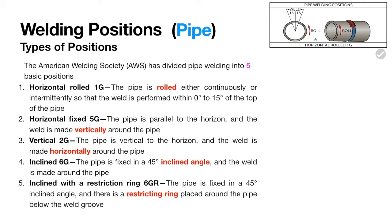Next we move to horizontal fixed or 5G. In 5G, the pipe with its horizontal axis has the welding groove in a vertical plane. The welding is done without rotating the pipe. The welder is going to move around the circumference.